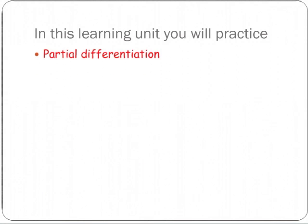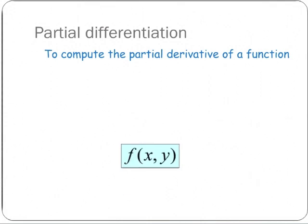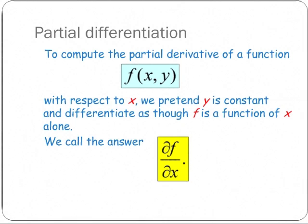Learning Unit 5. In this learning unit you will practice partial differentiation and the chain rule for partial differentiation. To compute the partial derivative of function f of x, y with respect to x, we pretend y is a constant and differentiate as though f is a function of x alone. We call the answer df by dx using this curly d.